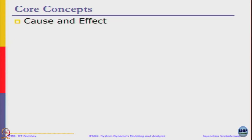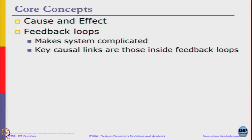Core concepts explored through a causal loop diagram are cause and effect — that is why it is called a causal loop diagram. We try to understand the feedback loops. If your causal loop diagram is just a linear thing — A causes B, B causes C, C causes D — that is not a loop, that is just a linear regression model; there is no feedback. The entire thing which makes it difficult is when feedback starts to kick in, it makes the system complex. The key causal links we are interested in are those inside those feedback loops.